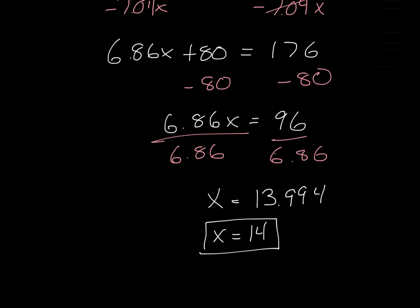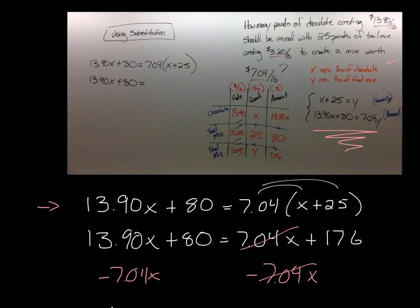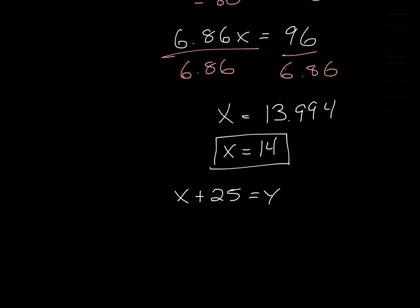We need to find out what our y value is. We'll go up to our equations to figure that out. x represented the number of pounds of chocolate that we used, and y is the amount of the final mix. If we want to find y, we can use this formula: x plus 25 equals y. With x equals 14, we get 14 plus 25 equals y, which is 39.